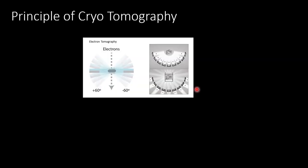For anyone unfamiliar with cryo-electron tomography: the sample is embedded in a thin layer of vitreous ice — water frozen so quickly it can't form a crystalline structure, so electrons can pass through it. Unlike CT scanners with a full 360-degree view, in cryo-ET both the electron gun and detector are stationary, so we tilt the sample back and forth. This results in a missing wedge of data, typically from about plus 60 to minus 60 degrees. We take 2D projection images, back-project them, and produce a 3D volume.